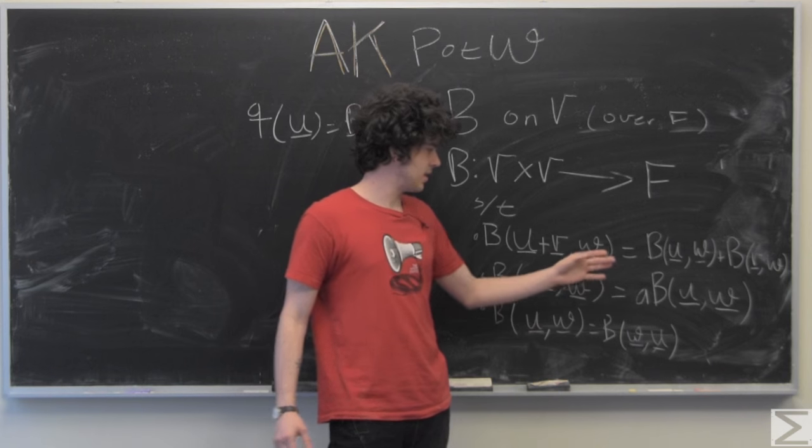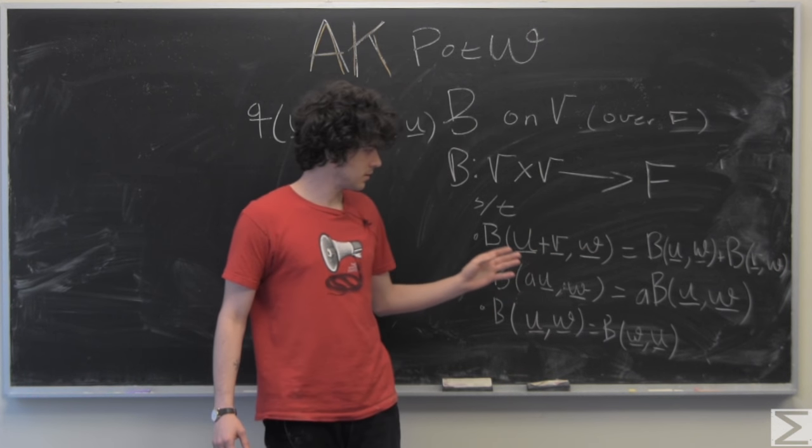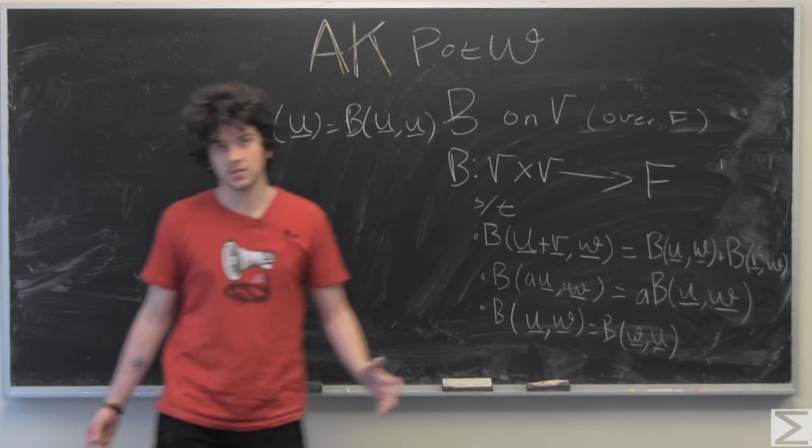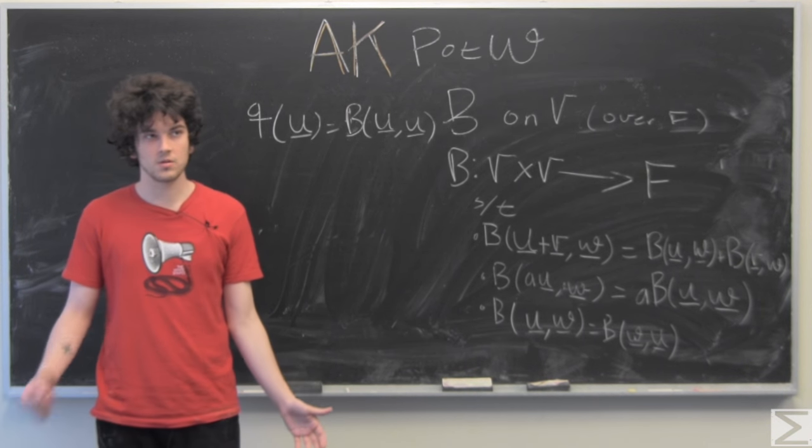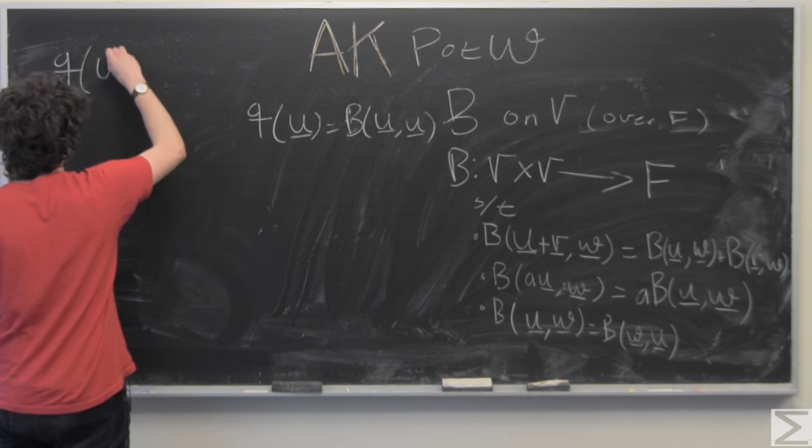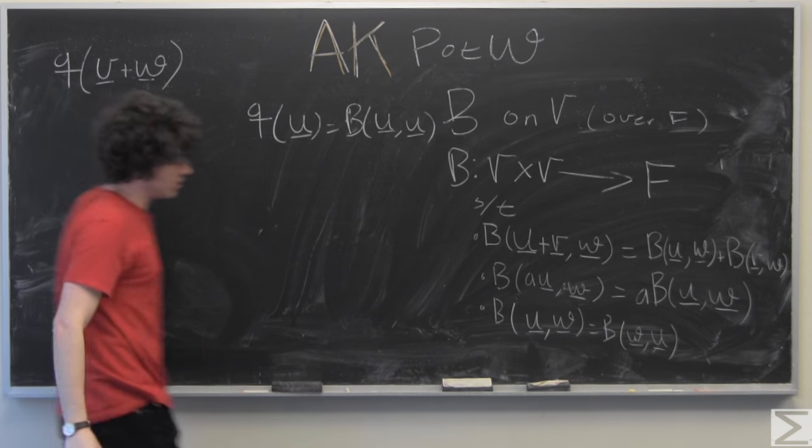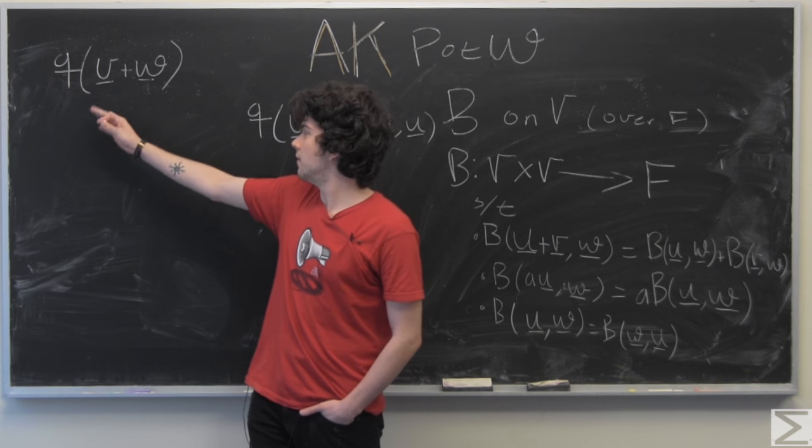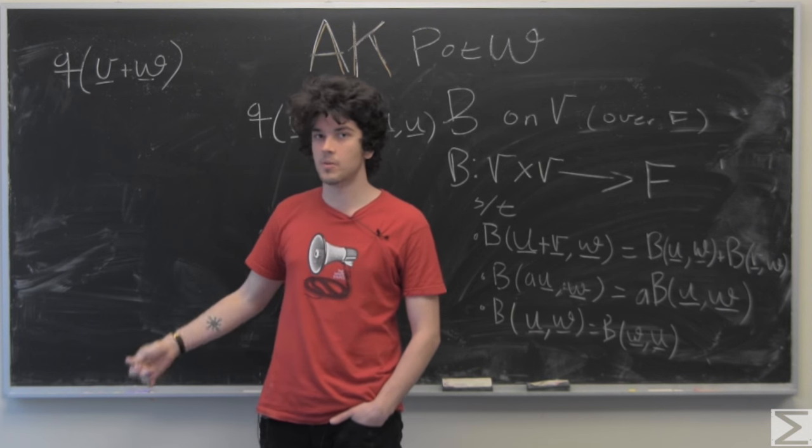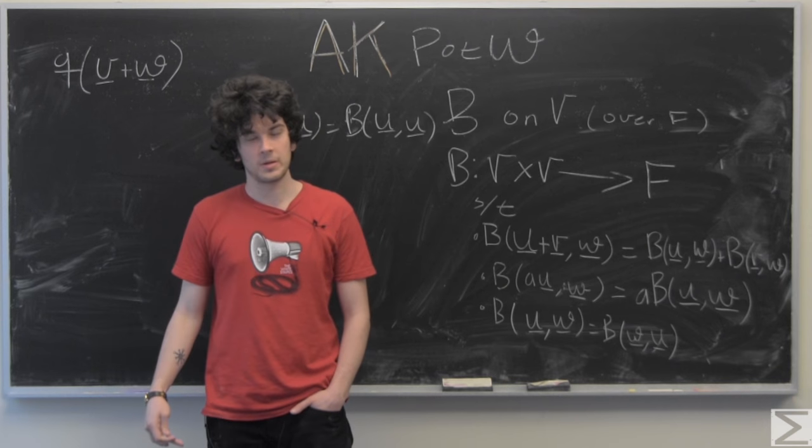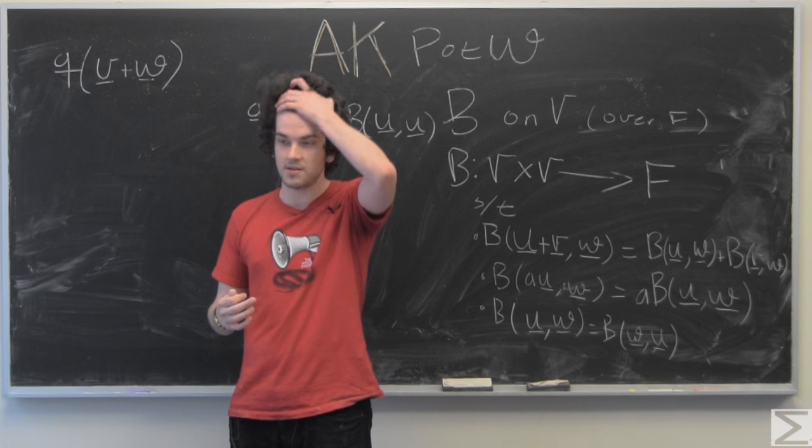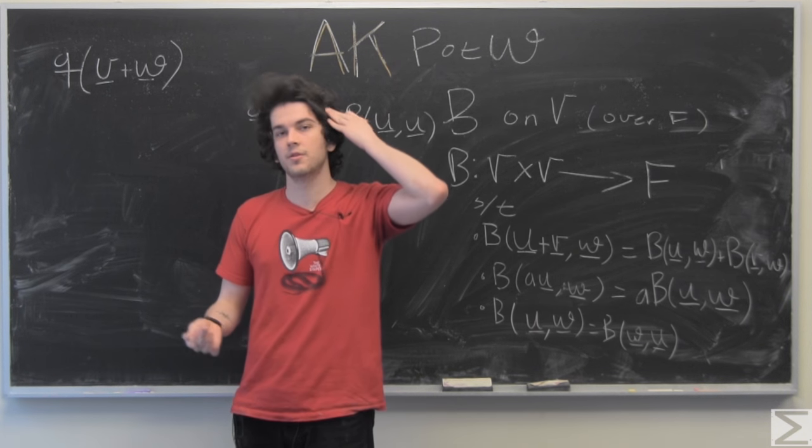And we also notice that it gives us, it kind of splits it up nicely. And since vector spaces are closed under addition, we know that our vector V plus W is also in our vector space. So we're going to take the quadratic form of V plus W, manipulate it, see if we can find our combination of vectors and the bilinear form of those vectors.